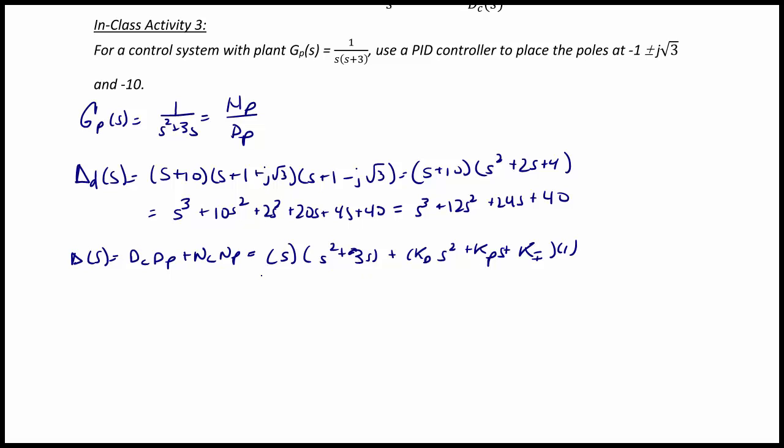So when we simplify this, we get s squared plus the quantity 3 plus kd times s squared, plus kp s plus ki.